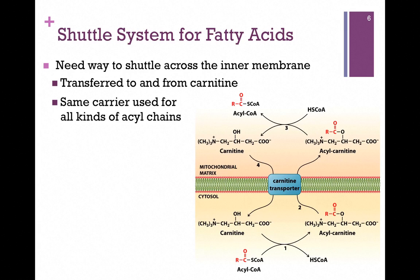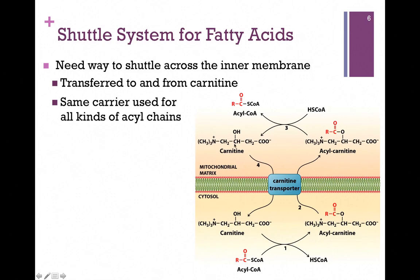How do we get those acyl chains into the matrix? We need a shuttle system. They are transferred to and from the molecule carnitine, as illustrated here. In the cytosol, here's our carnitine molecule and our acyl-CoA — we simply transfer that acyl group, highlighted in red, to carnitine with the release of coenzyme A. Now our acyl-carnitine can be transported into the mitochondrial matrix by means of the carnitine transporter. Then we simply reverse the process within the matrix — we take that acyl group and transfer it to CoA with the release of carnitine. Carnitine moves back into the cytosol so that it can pick up another fatty acid chain and carry it into the matrix.